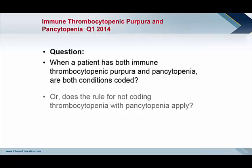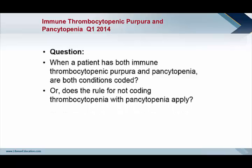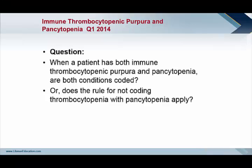The reason the question is being asked is: does the rule for not coding thrombocytopenia with pancytopenia apply? That comes from the Coding Clinic first quarter 1991, which told us that neutropenia, thrombocytopenia, and anemia, when occurring concurrently, one would only assign the code for pancytopenia.